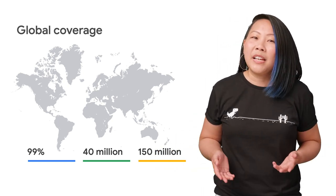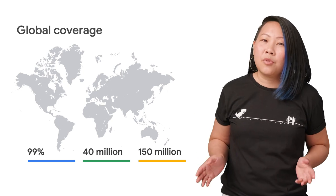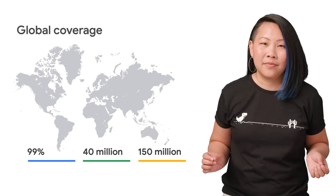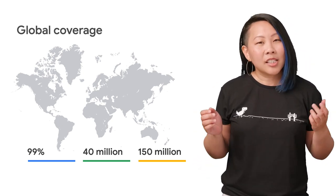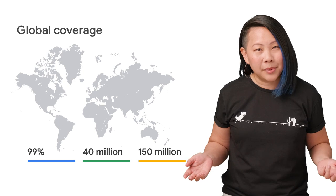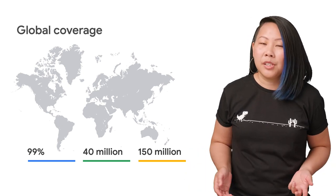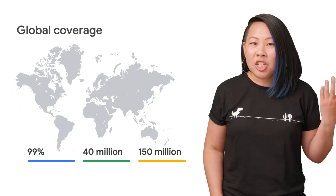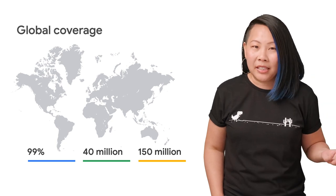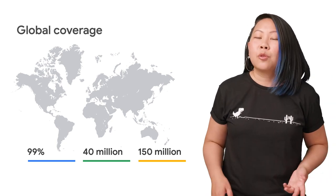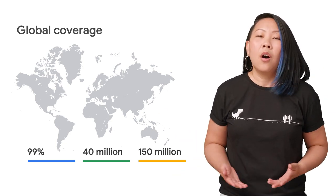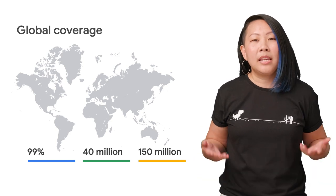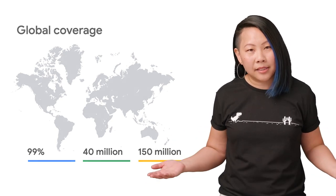On top of that, we invest a lot in improving the accuracy and freshness of our data. Since launching Google Maps, we've expanded our Street View vehicles to 88 countries, built advanced machine learning capabilities, and created our local guides program, all to increase how quickly we can keep up with the changing world around us.